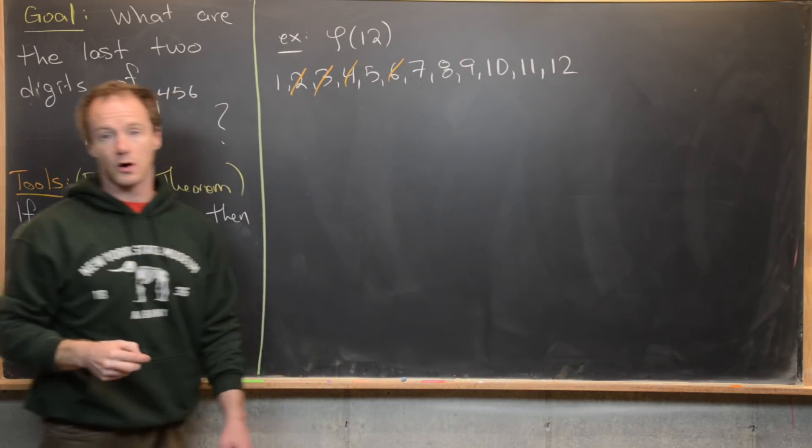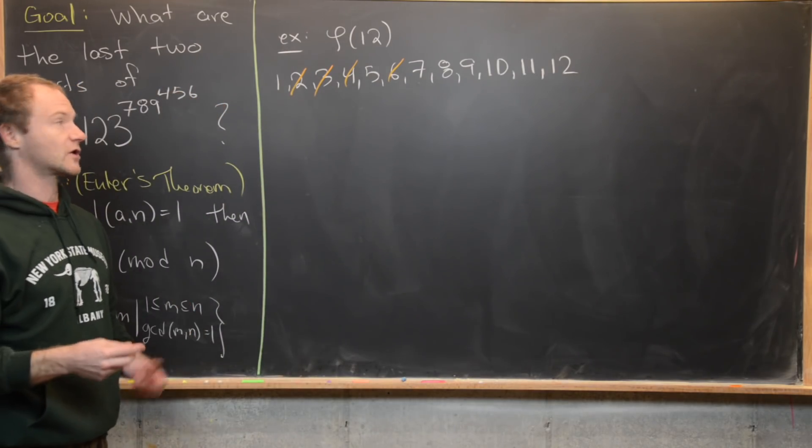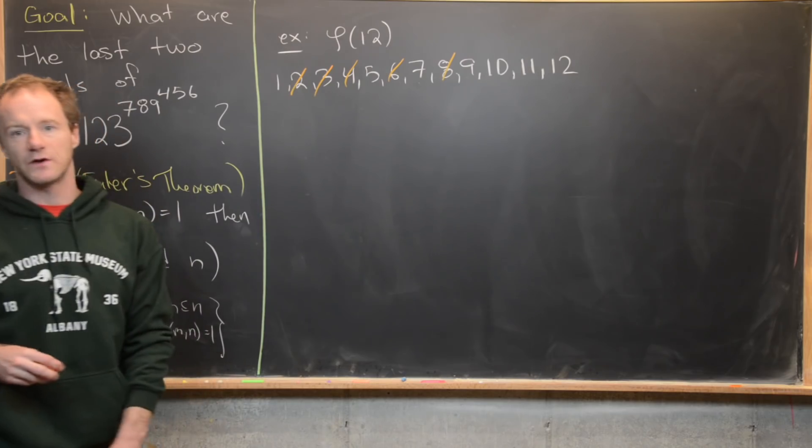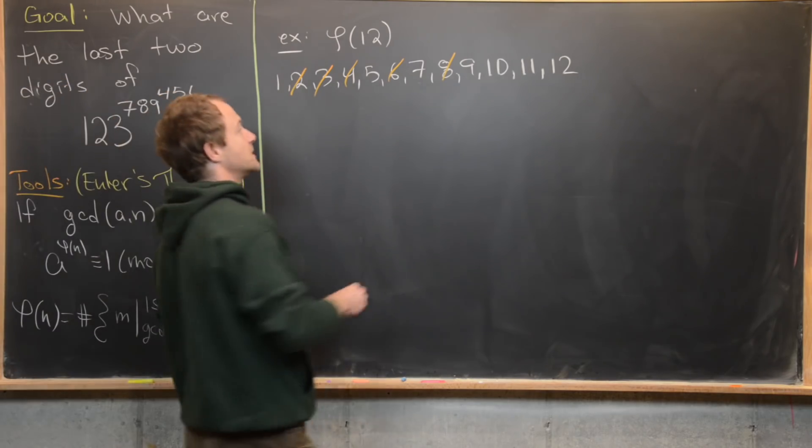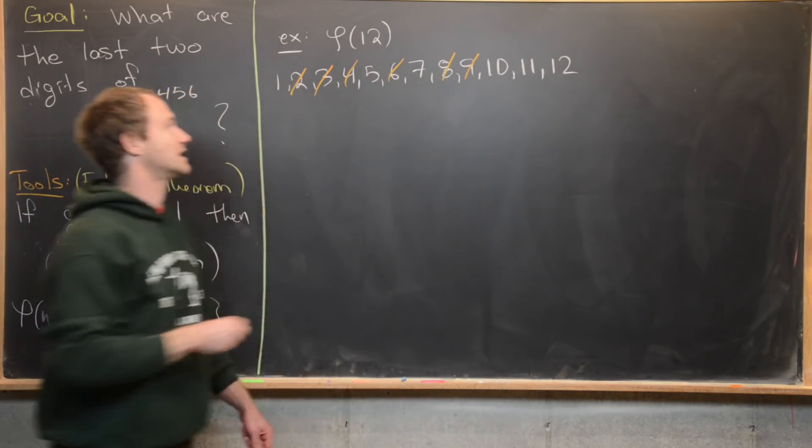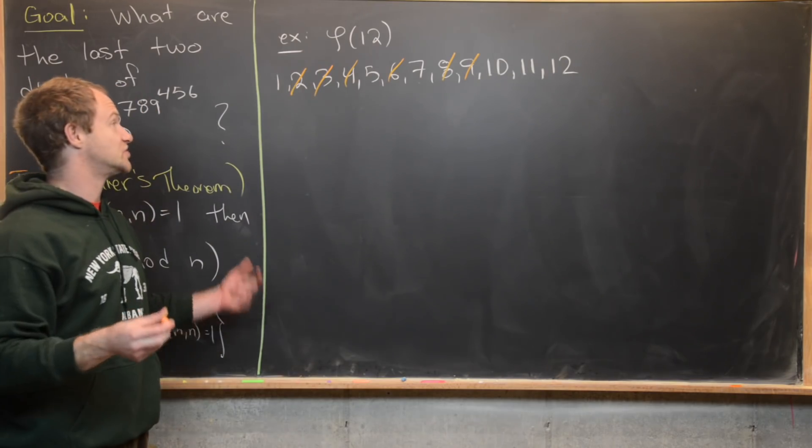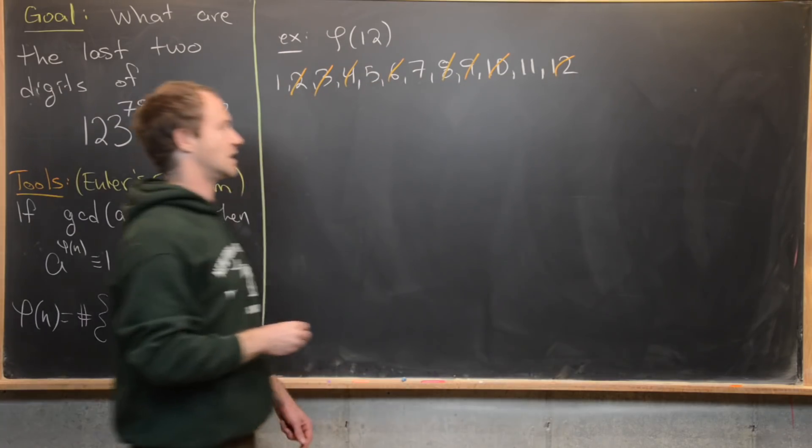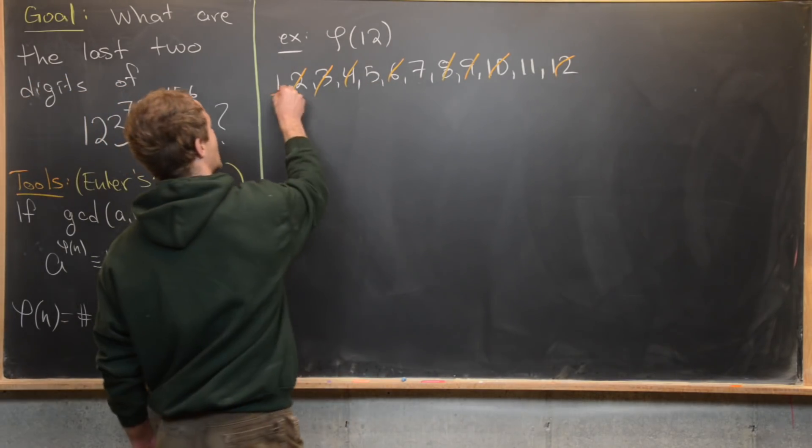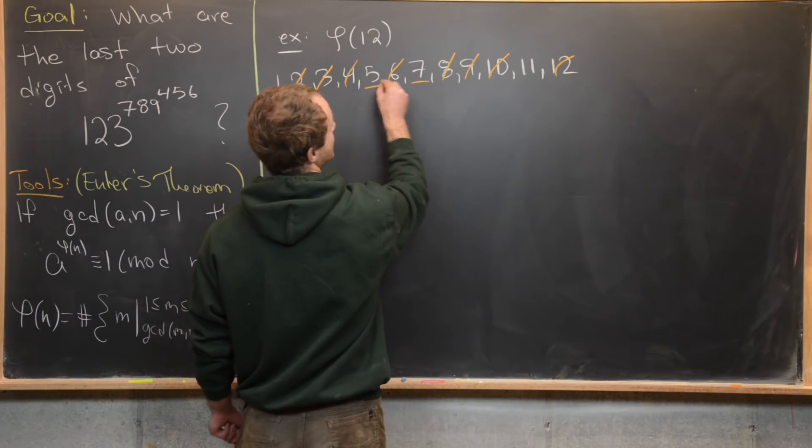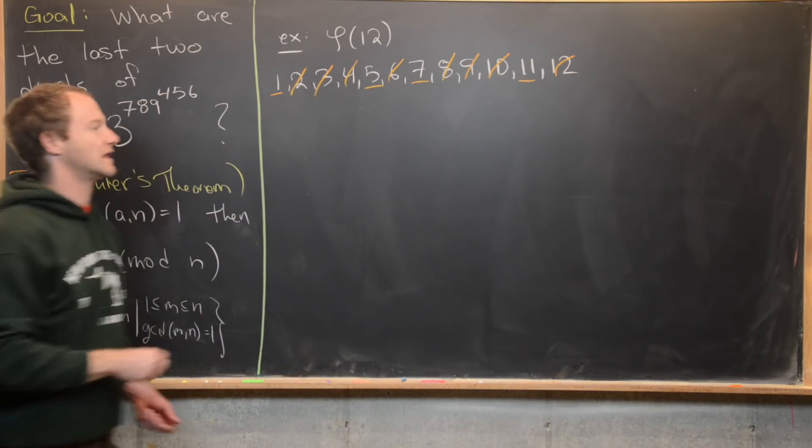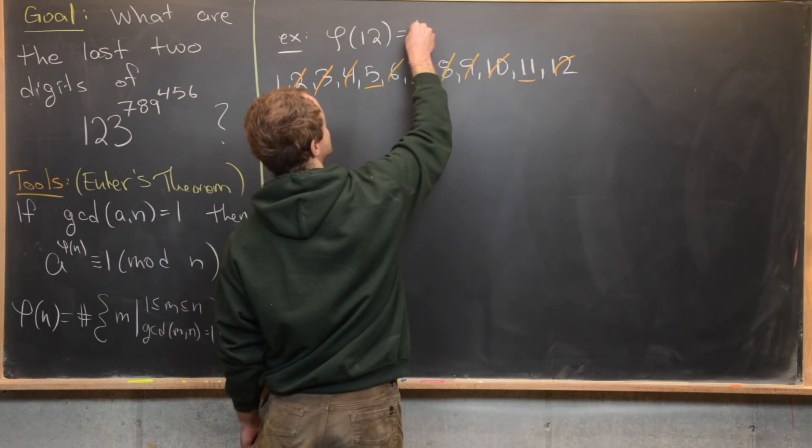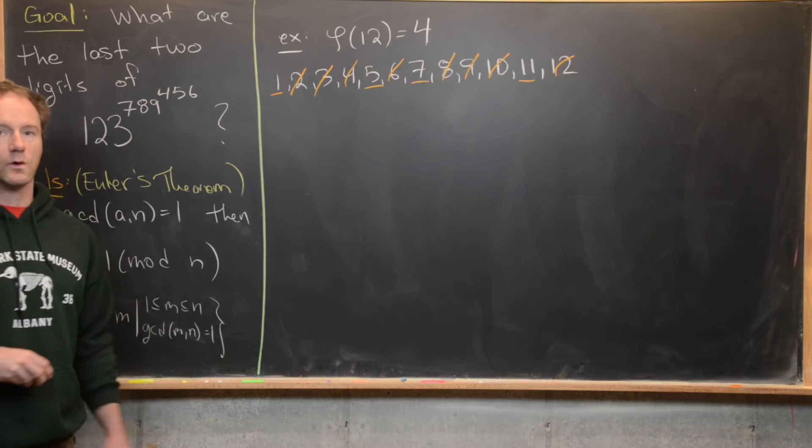5 and 7 are okay because they're prime, so they're automatically okay. 8 is not relatively prime to 12. Notice their GCD is 4. 9, that's not relatively prime to 12, their GCD is 3. So 10 and 12 are also not relatively prime to 12. So in the end, we have 1, 2, 3, 4 numbers that are relatively prime to 12 that are less than or equal to 12. And so we have phi of 12 is equal to 4.